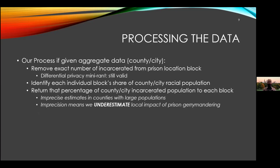If given aggregate data at the county level: first, remove the exact number of incarcerated from the prison location. Then identify each individual block in a county's share of the county's racial population. So for the 100 block of Market Street in Philadelphia — what percent of Philadelphia's black population lives on that block? What percent of Philadelphia's white population? What percent of its Latinx population? What percent of its multiracial, other, Pacific Islander, native or indigenous populations? Then return that percentage of the incarcerated people to each block. So if that block has 1% of Philadelphia's black population, and we know that 200 black Philadelphians are incarcerated, we will return two black people to that block.